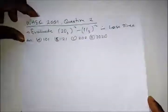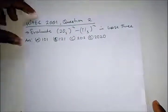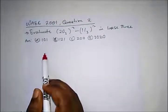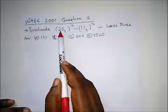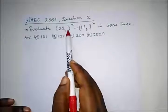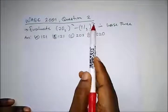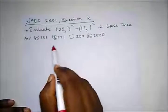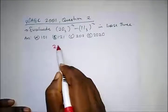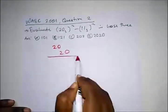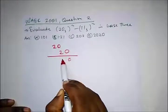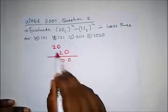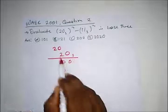Our final question is from WAEC 2001, question 2. It says: evaluate 20 base 3 raised to the power of 2, minus 11 base 3 raised to the power of 2, in base 3. So we compute 20 multiplied by 20. 0 times 0 gives 0, 0 times 2 gives 0. Then 2 times 2 equals 4.